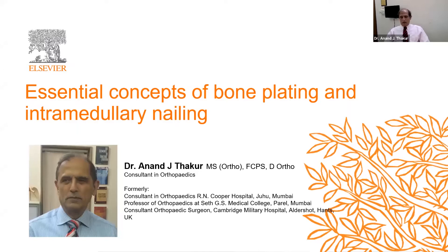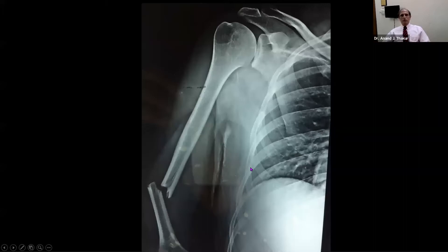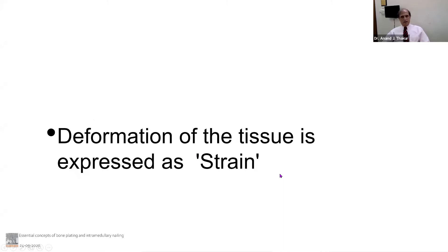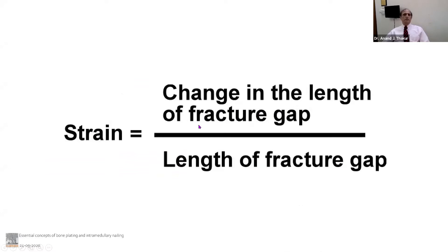In this session, we are going to talk about essential concepts of bone plating and intramedullary nailing. When a fracture occurs, the limb becomes unstable and the soft tissues are under distortion. A moment occurs at the fracture and the limb deforms. When the soft tissues are deformed, they are called in a state of strain — that is the technical term we use for that. We look at the fracture site: this is the original fracture length, and by stretching or pushing, there is a change in the fracture length. We take these two values and do a ratio — the change in the length of the fracture gap divided by the original fracture gap — and that gives us a ratio that we call strain. This entity we use all the time in discussing a fracture situation.